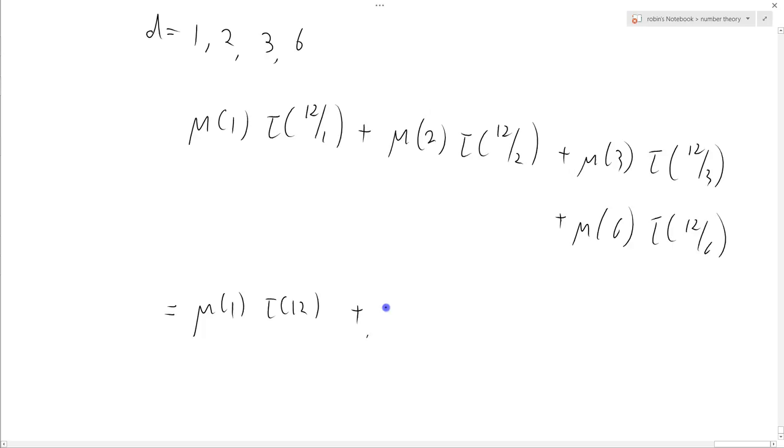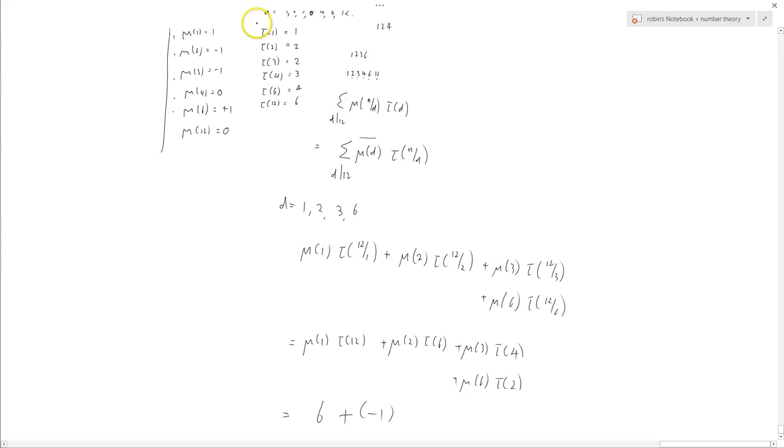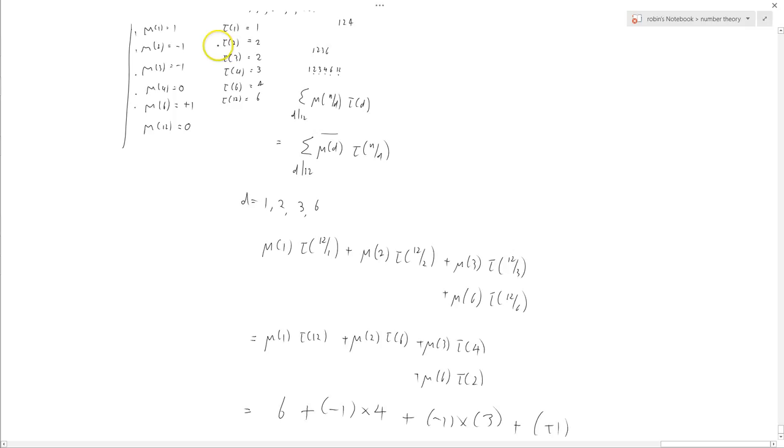Equals μ(1)τ(12) plus μ(2)τ(6) plus μ(3)τ(4) plus μ(6)τ(2). And I've got everything written down somewhere. Okay, so that equals μ(1) equals 1, τ(12) is 6, plus μ(2) which is -1 times τ(6) which is 4, plus μ(3) which is also -1 times τ(4) which equals 3, plus μ(6) which is this one times τ(2) which is 2.